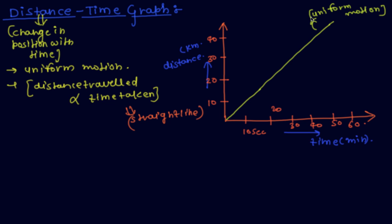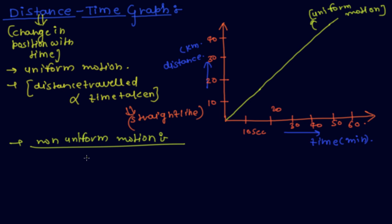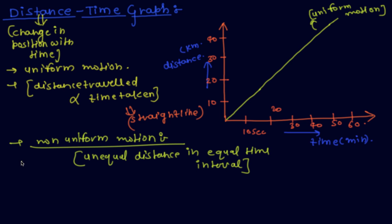Now I discuss about non-uniform motion. In non-uniform motion, the object travels unequal distance in equal time interval. So I can say this graph is not a straight line — it is a curved graph. So I draw a non-uniform motion graph like this, some curved graph. This is the non-uniform motion.